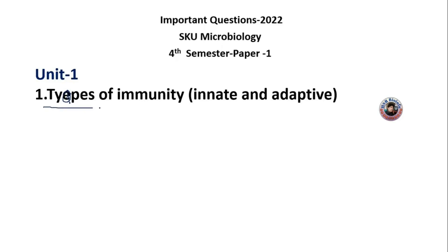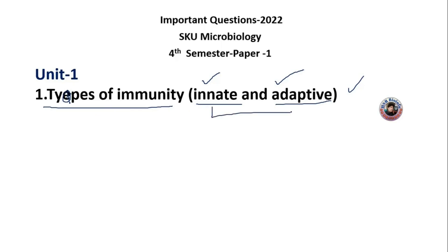Types of Immunity is very important — the difference between innate immunity and adaptive immunity. This question is very important. In the face of immunity, we have subgroups: innate immunity and adaptive immunity. We will discuss the difference between innate immunity and adaptive immunity.